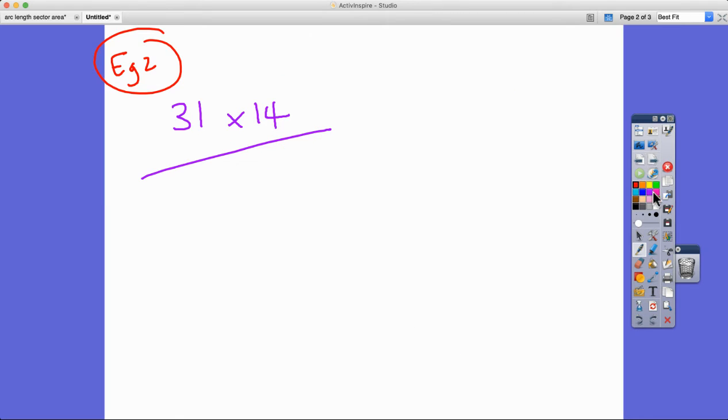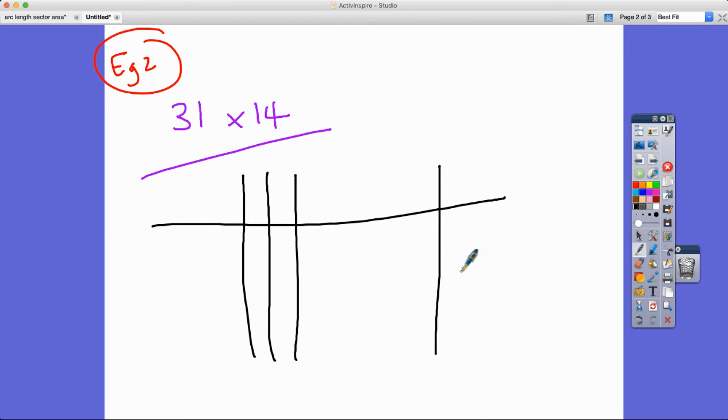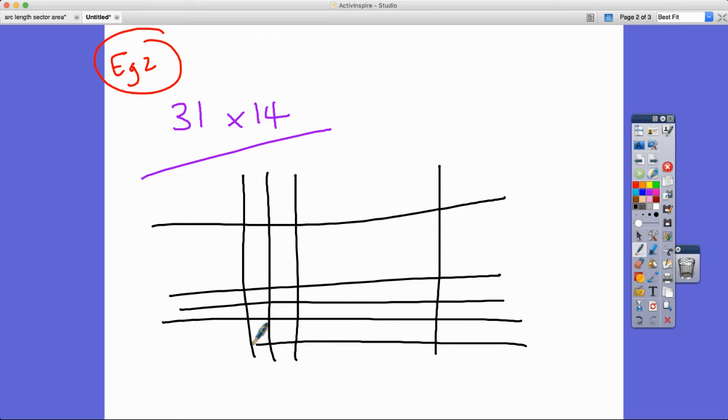Let's do another one. This one's a little bit more challenging, and I'll show you why. Actually, 31 times 14 is not really challenging at all. So we've got three and one, and then we've got one, two, three, four. There's just something you need to know, which I'll explain when I get the intersections.